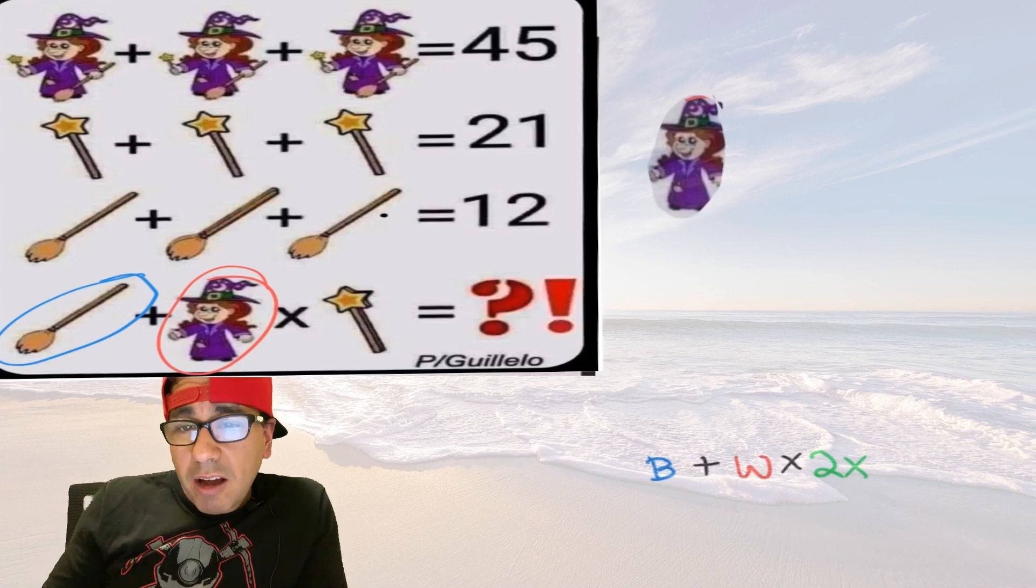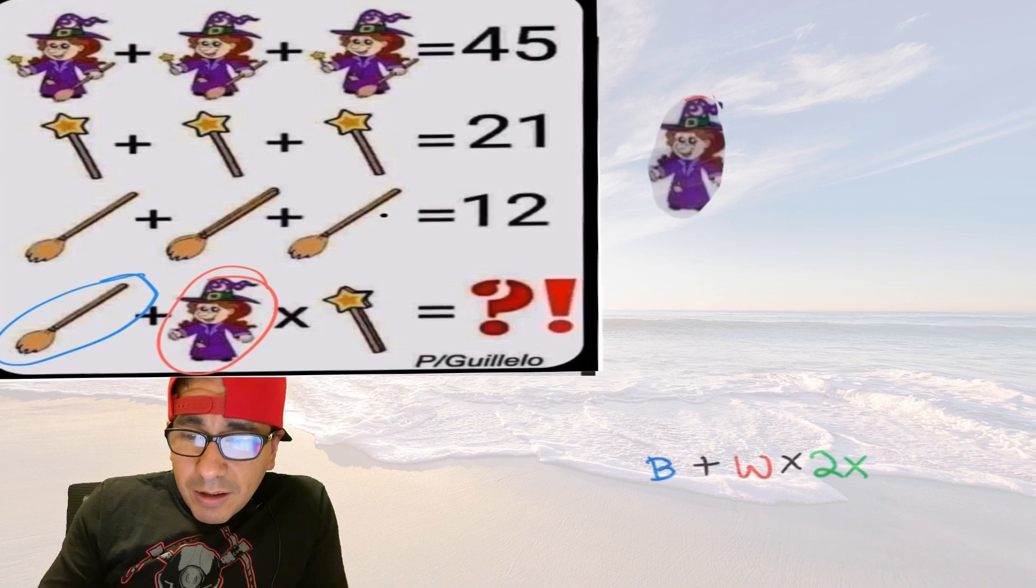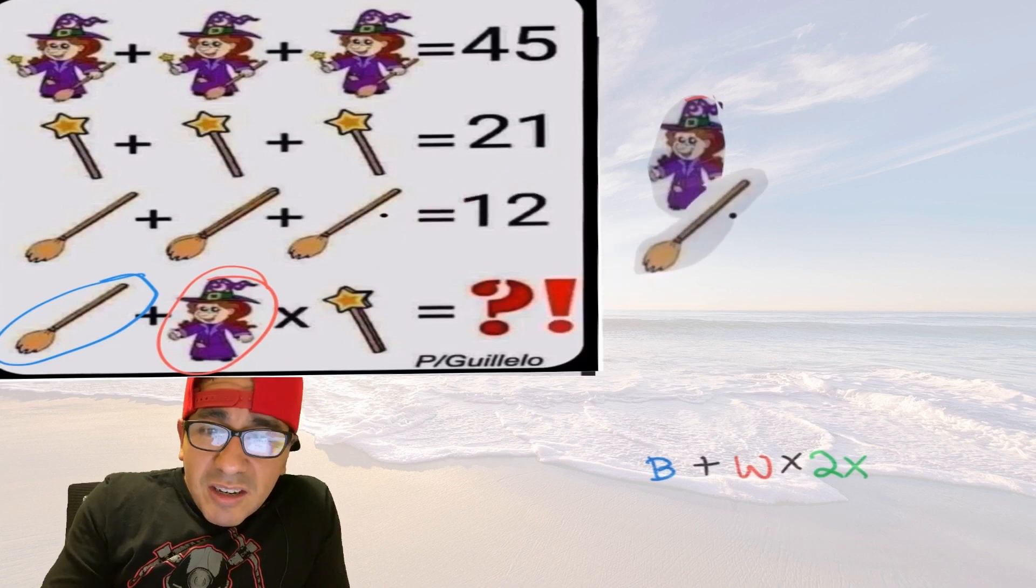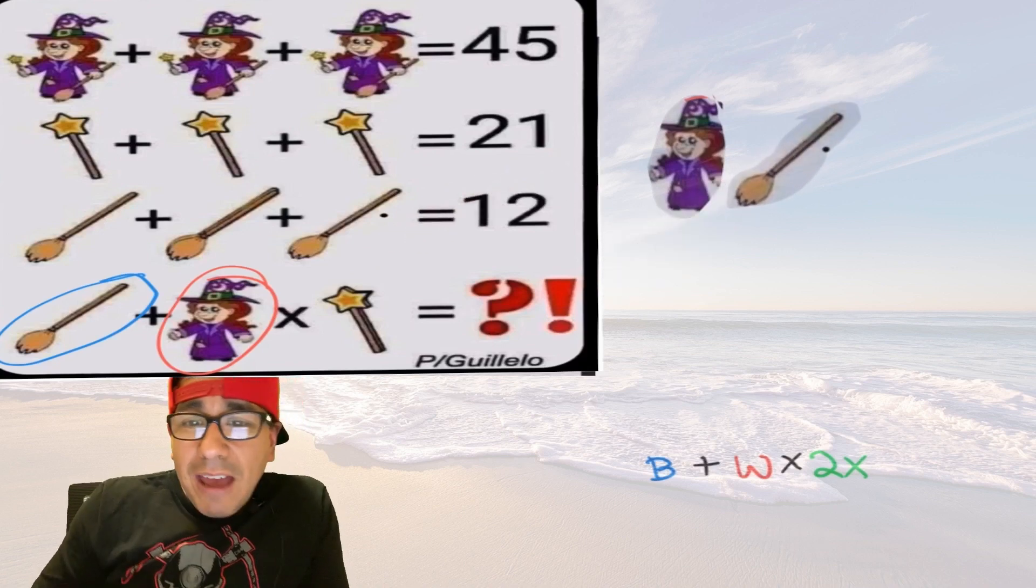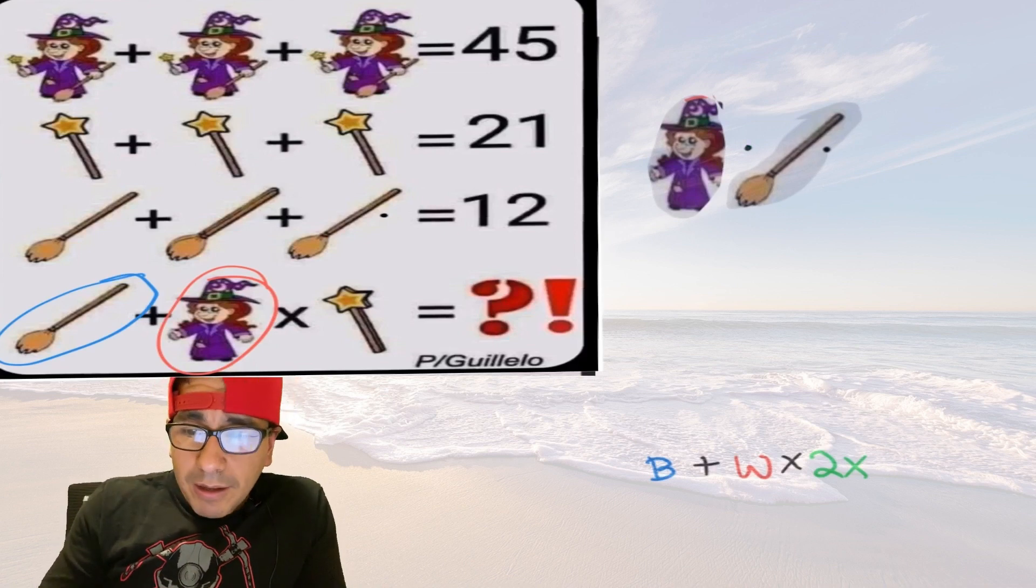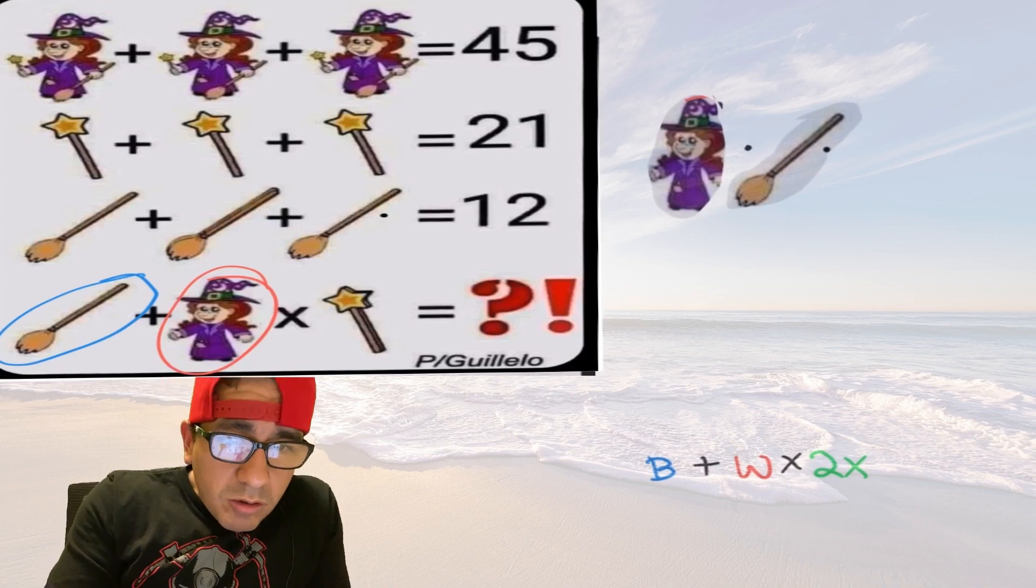What you would need to do is actually have a witch times... and the way we write multiplication using algebra, what we do is whatever you're looking at you need to write it right next to that variable. If you want you could add in a little dot to represent multiplication, I'll do it in black so you can see.